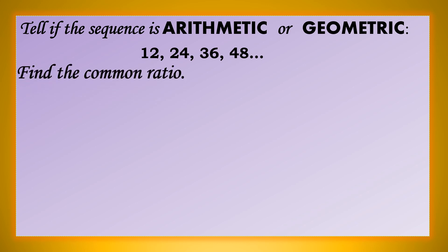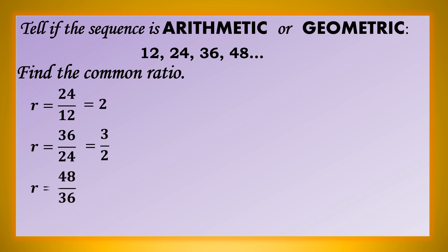Let us first find the common ratio. Paano ba pagkuhan ng common ratio? I-divide natin yung second term sa first term. So we have 24 divided by 12, which is 2. Yung third term, i-divide natin sa second term: 36 divided by 24 is 3 halves. I-divide natin yung fourth term sa third term: 48 divided by 36 is 4 thirds. Magkakaiba ang ratio niya, so there is no common ratio.